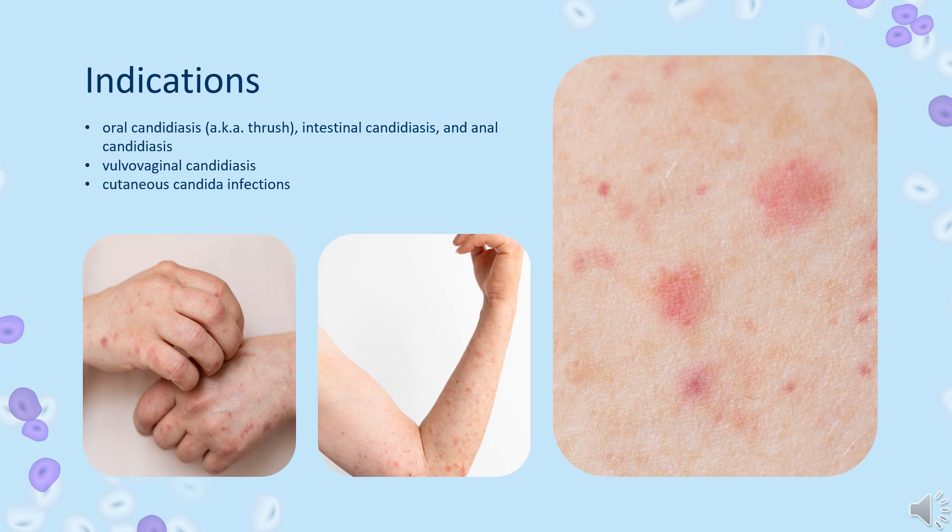A combination product containing Nistatin alongside neomycin, gramicidin D, and triamcinolone — Viaderm K.C. — is indicated in the treatment of corticosteroid-responsive dermatoses caused by bacterial or candidal infections, and for pruritus ani/vulvi. It is also available in combination with metronidazole for the treatment of mixed infections due to Trichomonas vaginalis and Candida albicans. Nistatin is also sometimes used off-label for the prevention of invasive candidiasis in low birth weight neonates, though it is generally reserved as a second-line option after fluconazole.